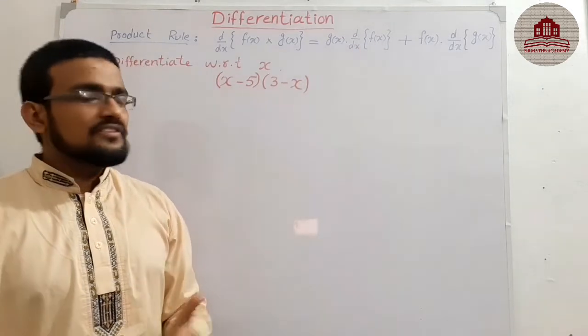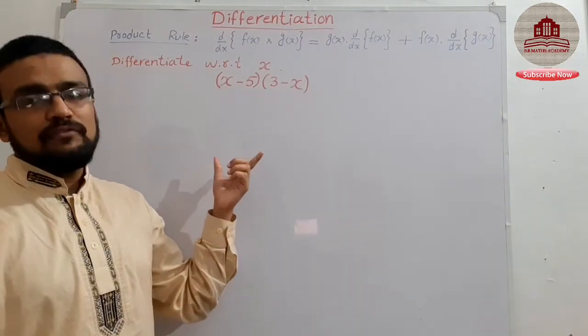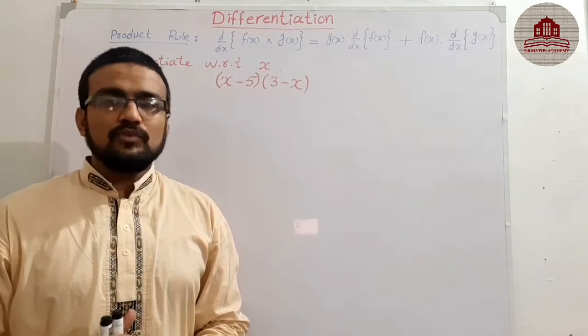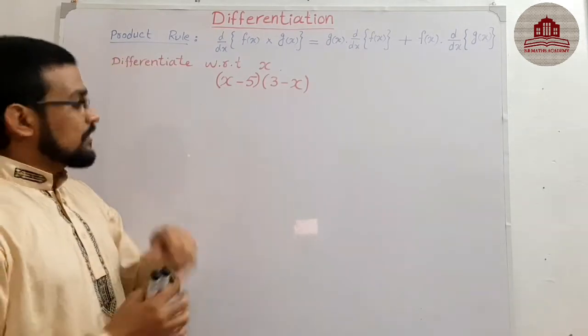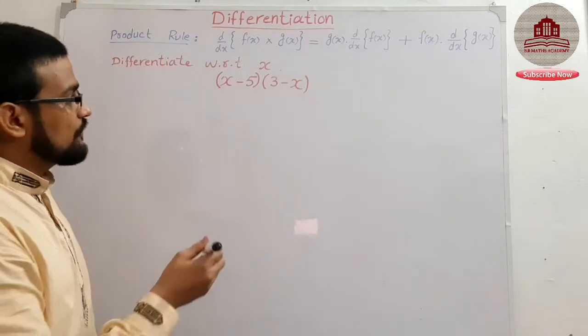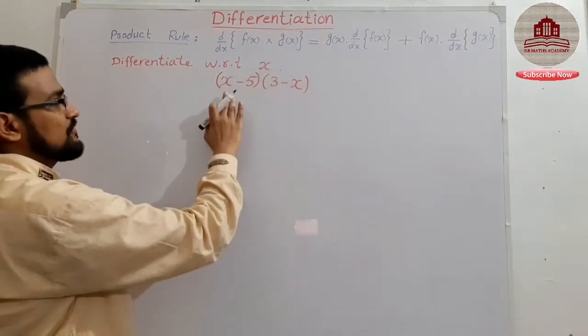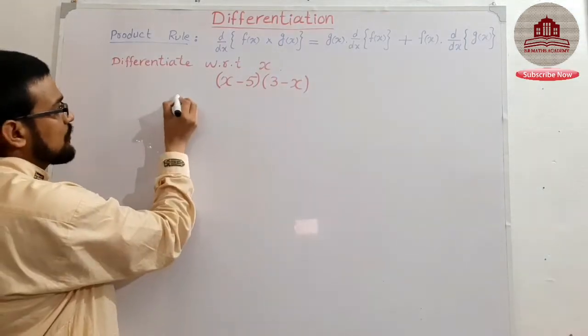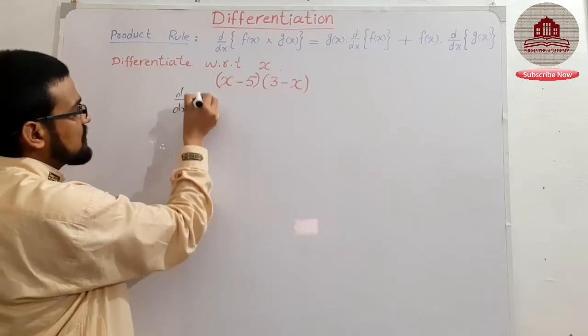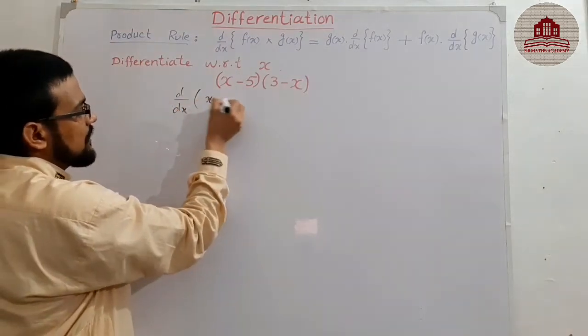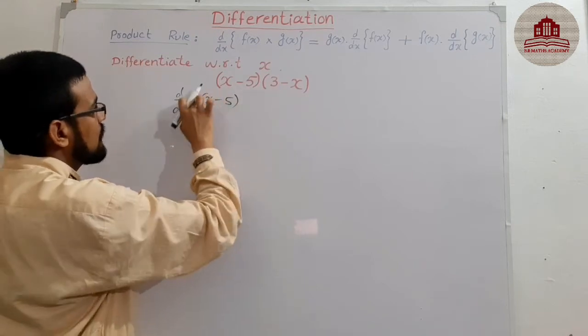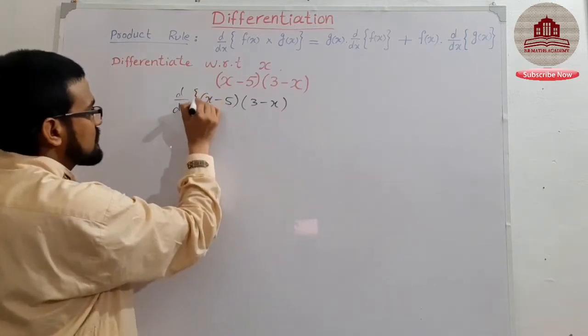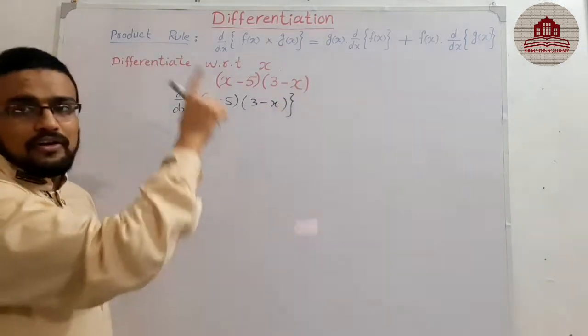First function as it is, second function derivative, plus second as it is, first derivative. This is a simple rule for derivation if two functions are multiplied or two functions in form of product. So solve it. Question: differentiate with respect to x, (x - 5) and (3 - x).